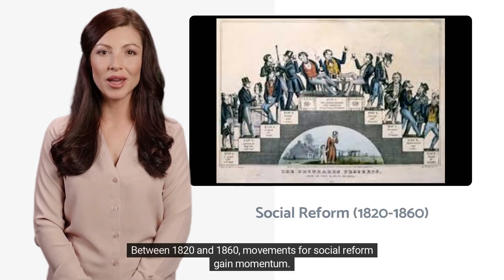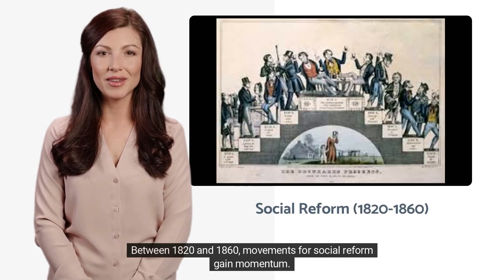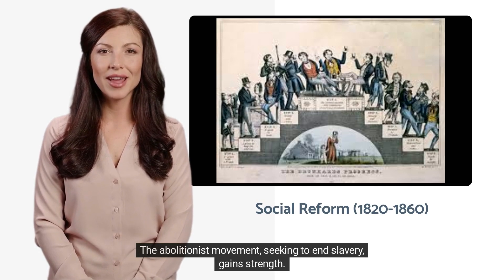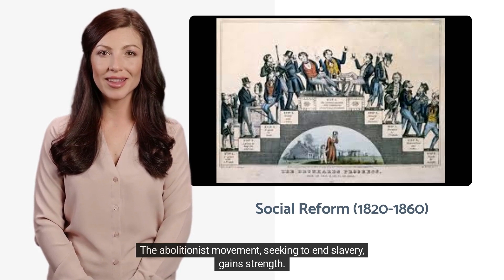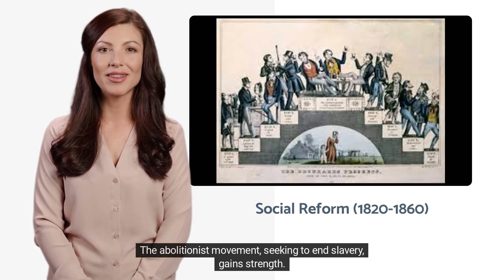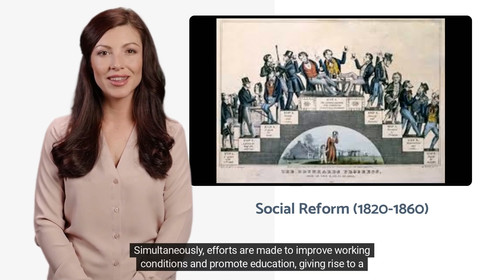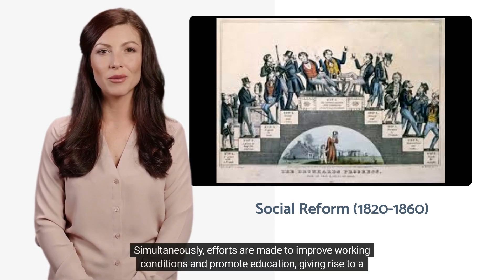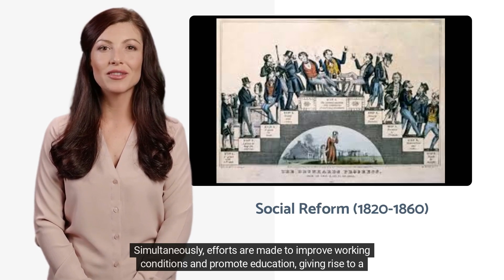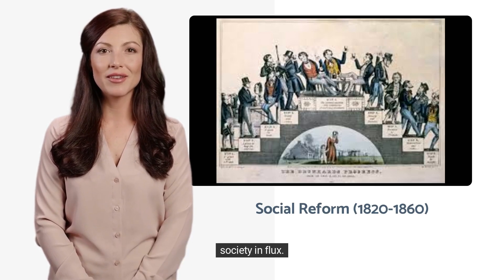Between 1820 and 1860, movements for social reform gain momentum. The abolitionist movement, seeking to end slavery, gains strength. Simultaneously, efforts are made to improve working conditions and promote education, giving rise to a society in flux.